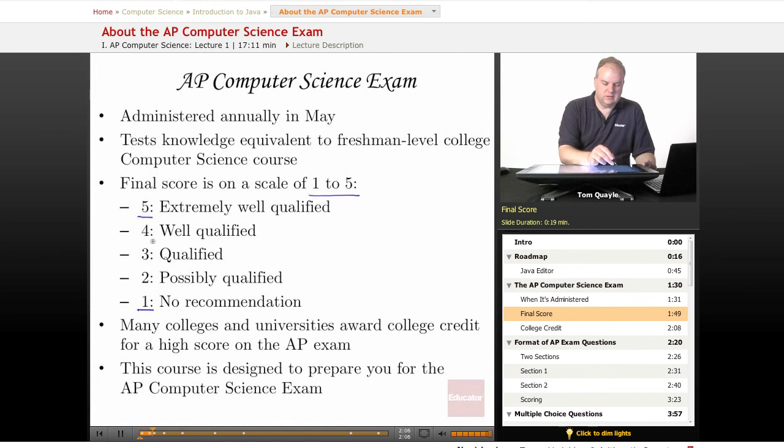Generally, you're going to need to get either a five or four to get college credit. Some colleges or universities may give credit for a three as well. This course is designed to prepare you for the AP Computer Science exam.